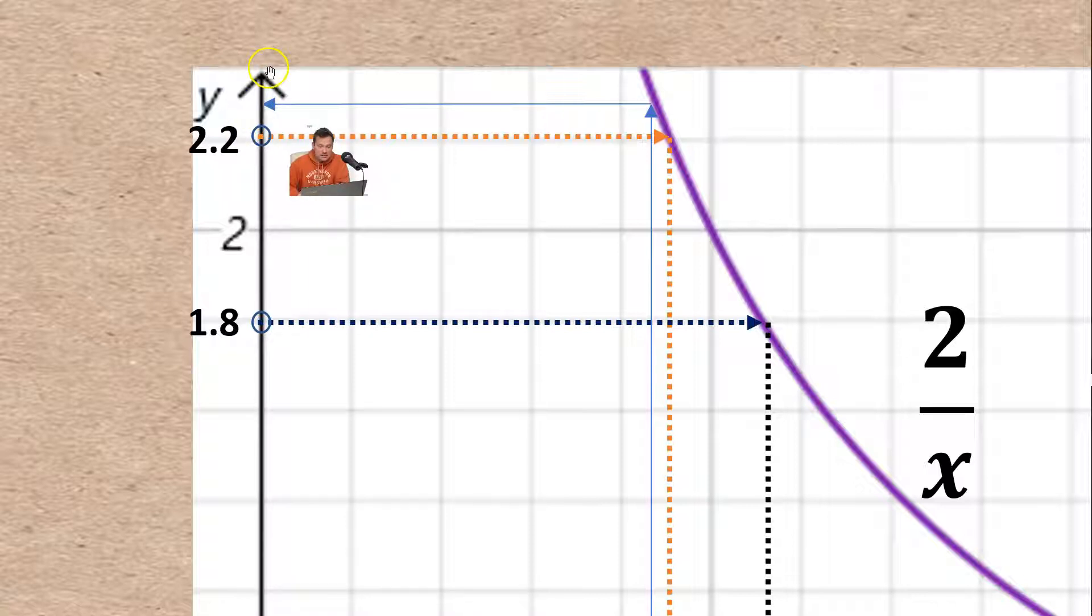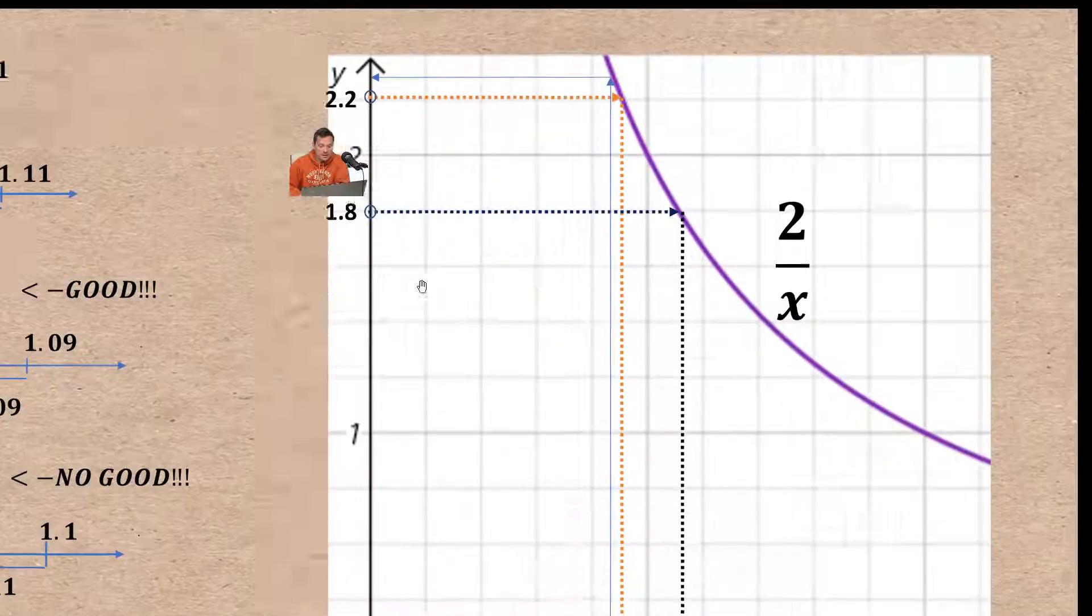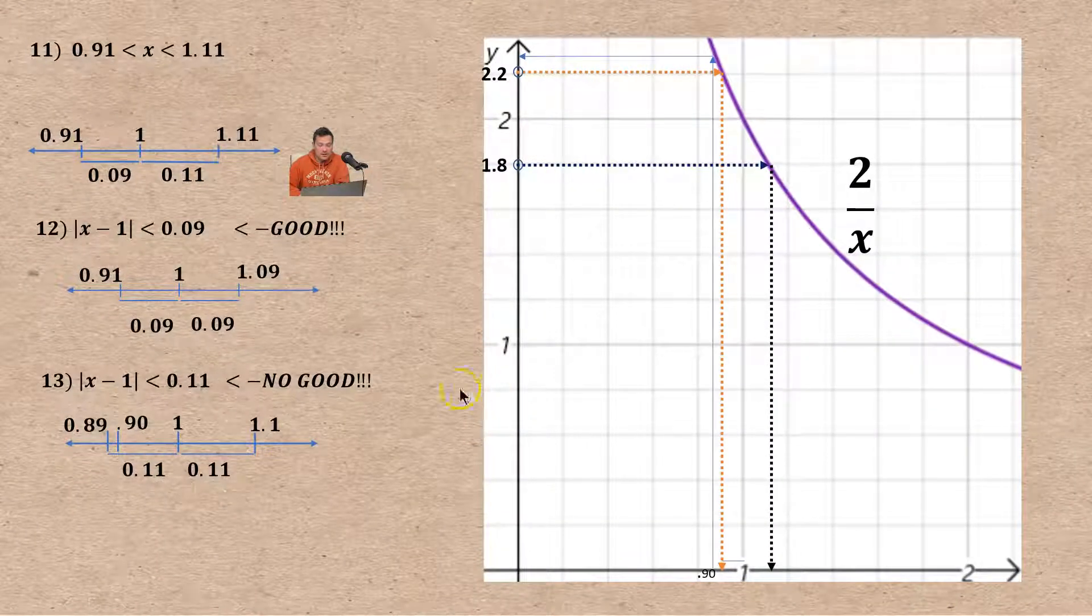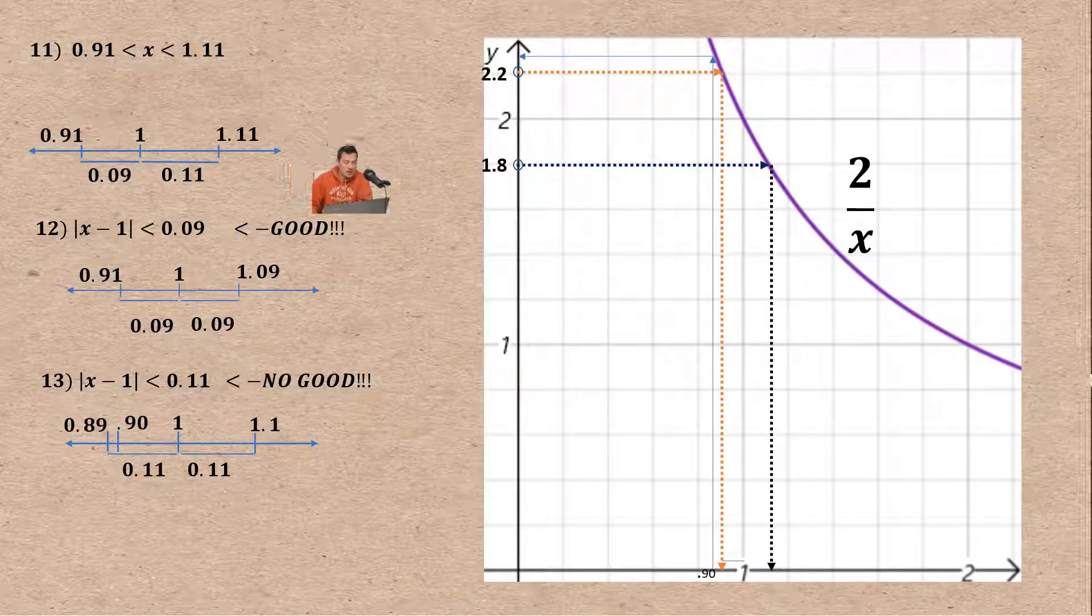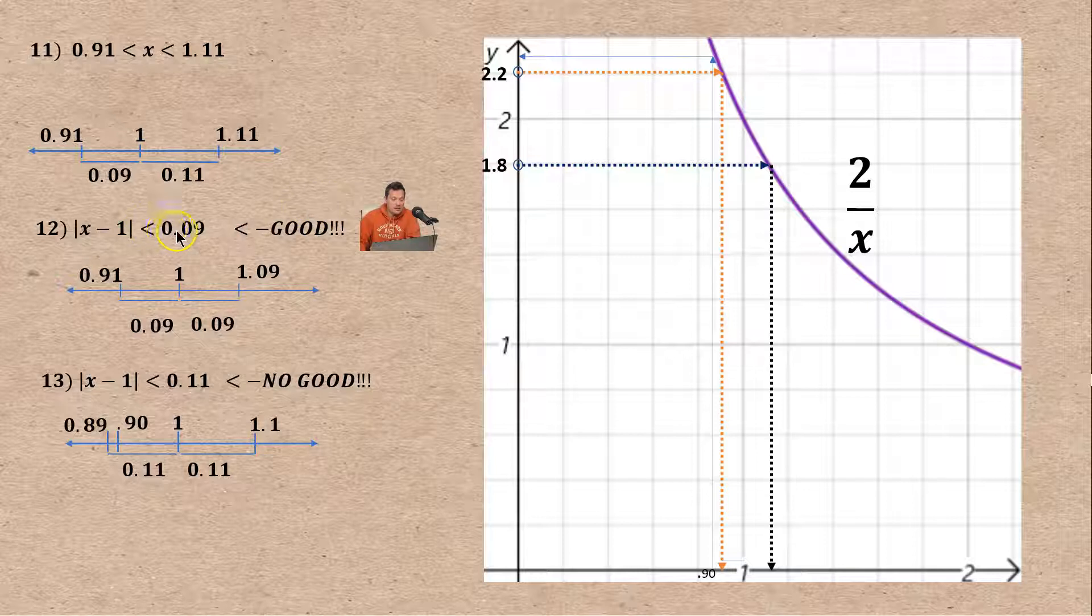I hope you've got that subtle detail down. So how can we fix this? We can fix this simply by taking the smaller of the two deltas. In other words, we're going to fix it by taking 0.09 as the delta. It's the smaller of the two possible gaps that solving our inequality produced. Let's add some additional details. I'll zoom in and talk about them a bit more.